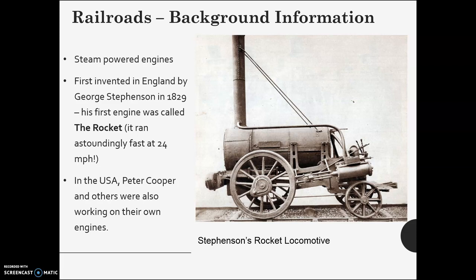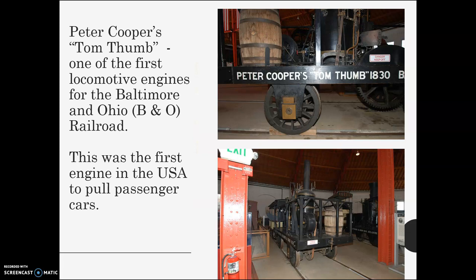It's actually in England where they invent the first steam-powered trains — George Stephenson's The Rocket. It was called The Rocket because it went so fast: 24 miles an hour, which seems silly by today's standards, but it really changed everything. In the U.S., Peter Cooper and others were working on engines at the same time, and they're going to be deployed here. This is a major, major change in transportation. When trains were first made, people really believed they would be mostly for transporting goods, but they quickly realized how much people wanted to use them to commute and travel.